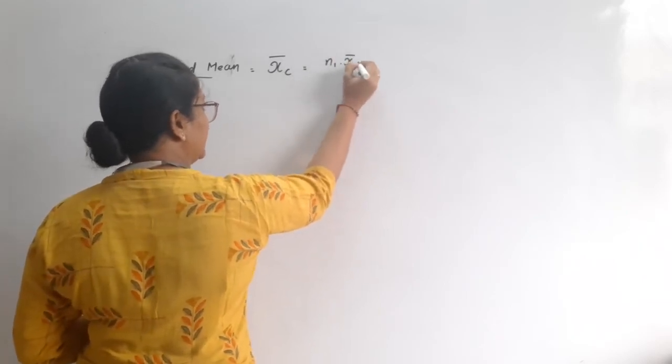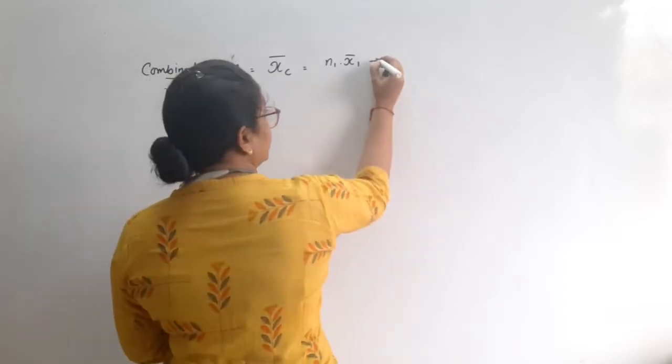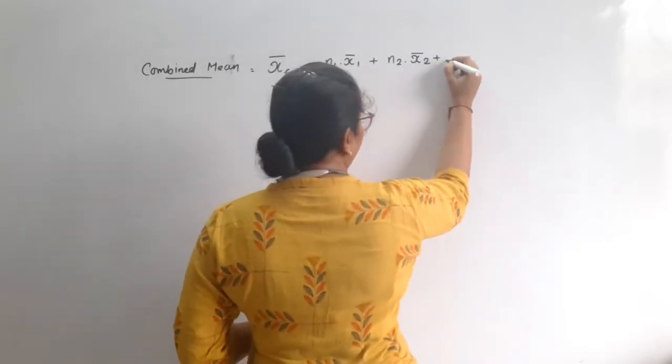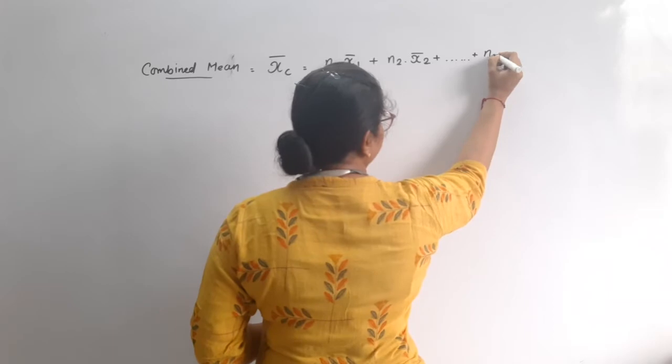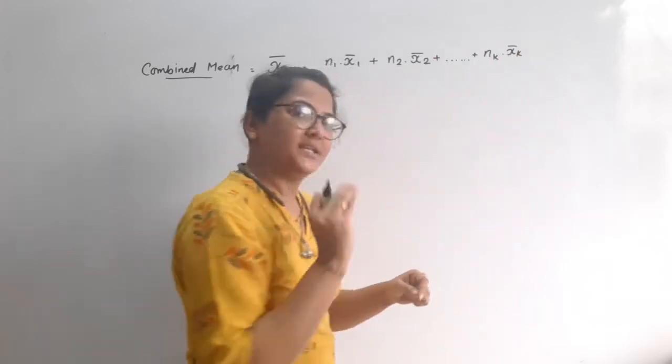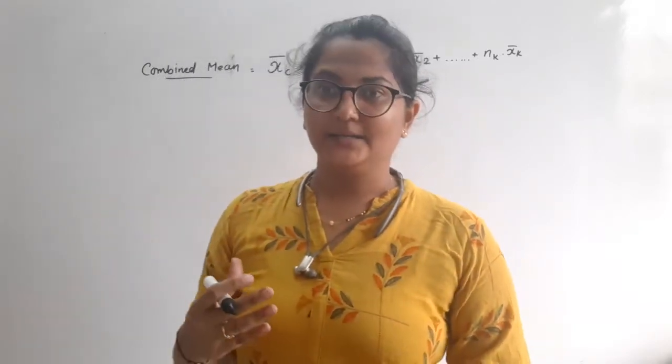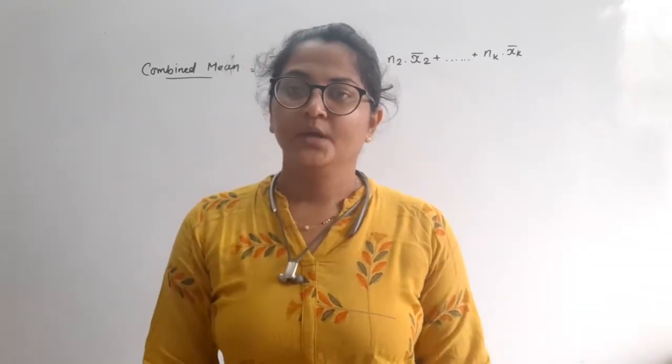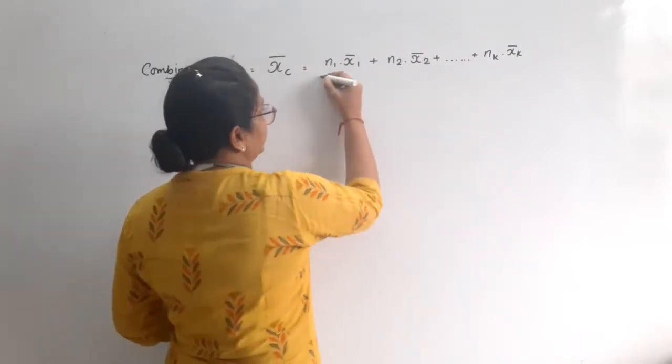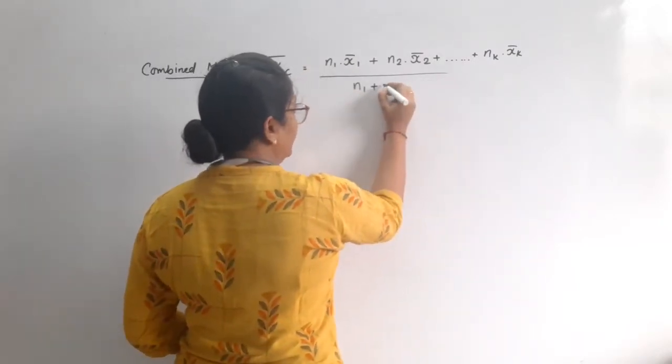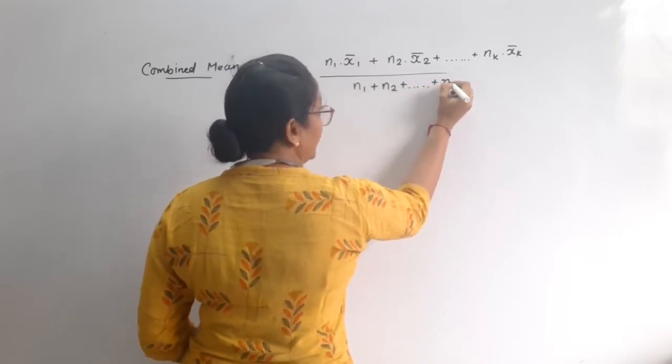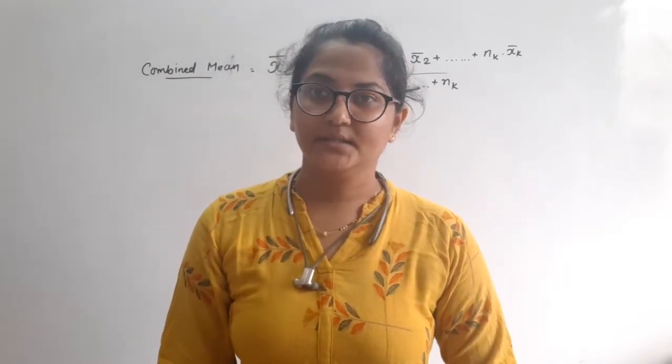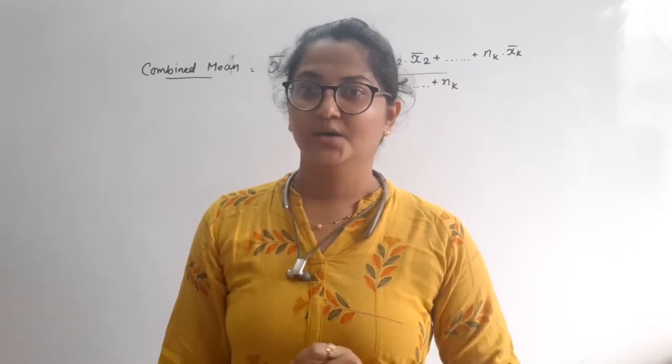Combined mean of x bar c equals n1 x bar 1 plus n2 x bar 2 plus n3 x bar 3, n4 x bar 4, n5 x bar 5, divided by n1 plus n2 plus nk. Is it clear? Very good.